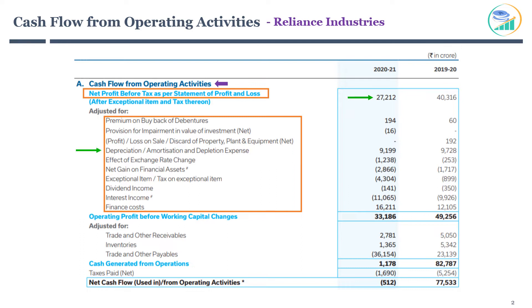Starting with Depreciation, Amortization, and Depletion Expenses. If you recall from the Income Statement, Depreciation and Amortization expenses are recorded evenly over the estimated life of assets. For example, if a company buys a machine worth 10 crore with an estimated life of 10 years, the company will pay upfront cash of 10 crore for buying the machine. However, this expense will be recorded as 1 crore of depreciation expense each year for the next 10 years on the Income Statement. Since the cost of the machine was paid upfront in the past and cash did not leave the company during that period, Depreciation and Amortization expenses are added back to operating cash flow.